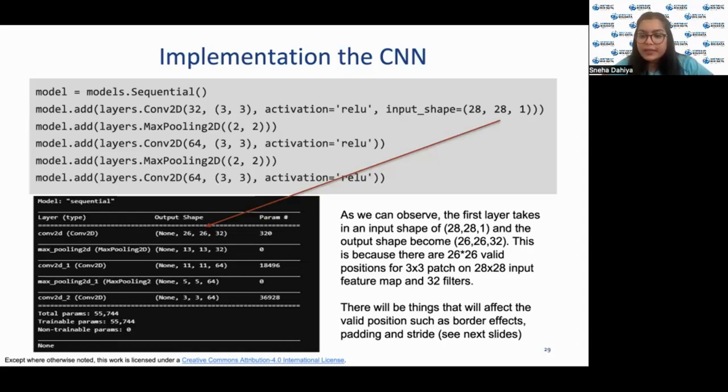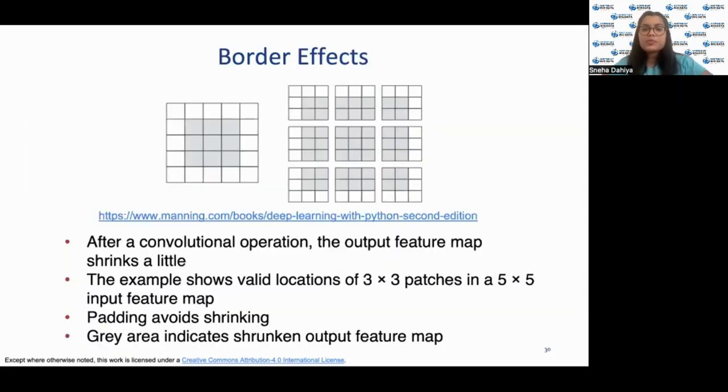Talking about border effects. After a convolutional operation, the output feature shrinks a little. The patches are formed by moving the specific size patch around the image and stopping at every valid location. The image shown shows the valid location for a 3 by 3 patch on a 5 by 5 input. To avoid border effects or to avoid shrinking, we can use padding. It is basically how the input feature map in effect getting smaller and smaller with the application of convolutional operation can be prevented.